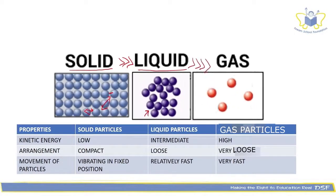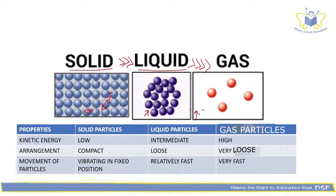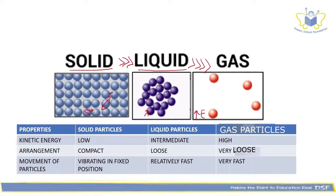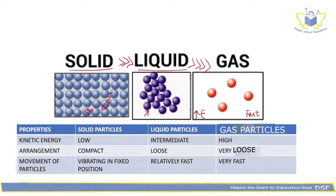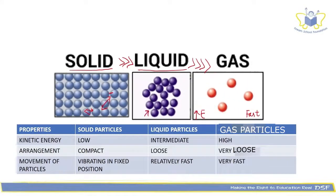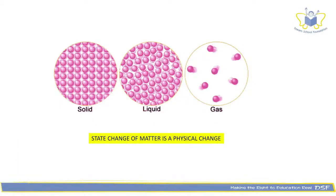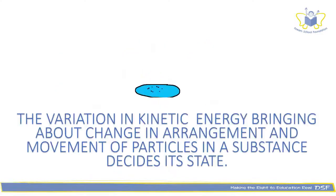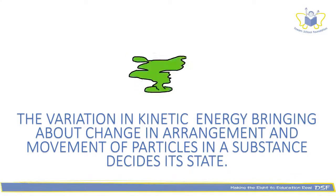Finally, when enough energy is supplied, kinetic energy is very high, particles move very fast, the force of attraction is very low — hence they are in a gaseous state. State change of matter is a physical change. The arrangements are very different in solid, liquid, and gas, but the particles undergoing this state change are just the same — the particles haven't changed at all. The variation in kinetic energy bringing about change in arrangement and movement of particles in a substance decides its state.